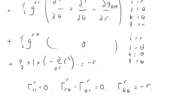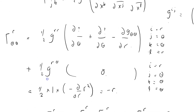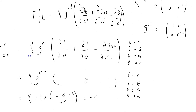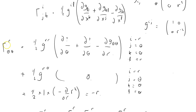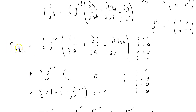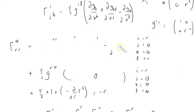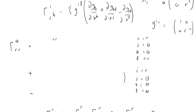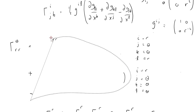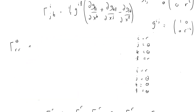These are quite difficult manipulations — it's easy to get tangled up in the indices, and this is a very simple example. Next is Γ^θ_rr. I'll clear the working and start again. i equals theta, j equals r, k equals r, summing over l equals r and l equals theta.